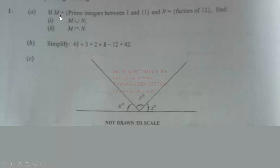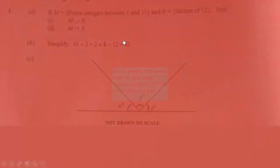So first, let us list the elements of set M. Set M is prime integers between 1 and 11, the same as prime numbers between 1 and 11. So prime numbers between 1 and 11 are 2, 3, 5, and 7.